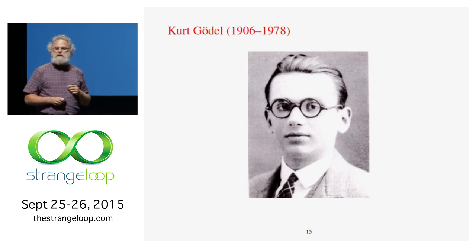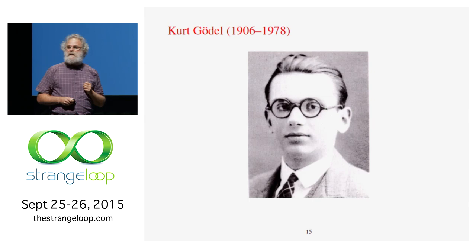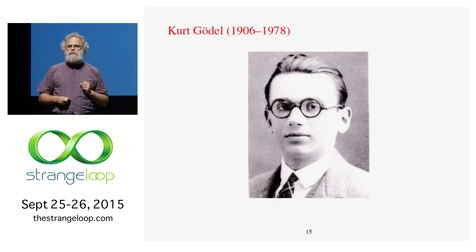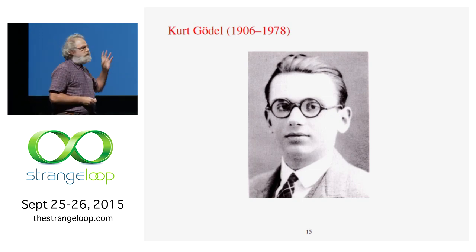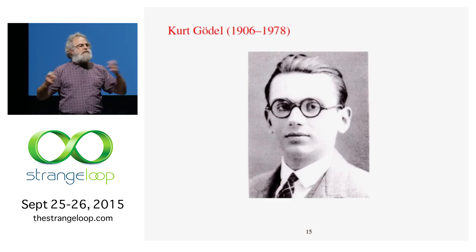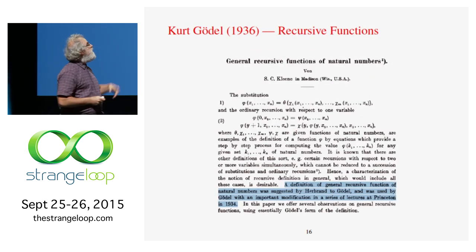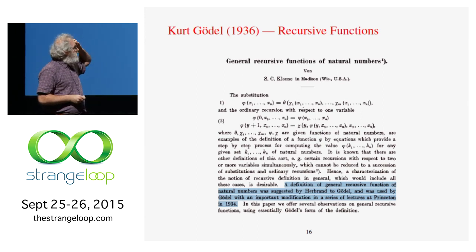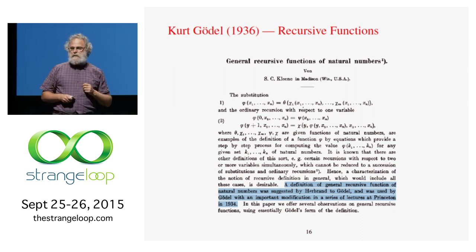Kurt Gödel came visiting in Princeton and he thought that Church's solution was — his precise words — "thoroughly unsatisfactory." So Church went to Gödel and said, look, you come up with your own definition and I'll show that mine is as good as yours. And Gödel did. He came up with a second definition of effectively computable, which he called general recursive functions. This was actually written up by Church's student Kleene, with attribution.